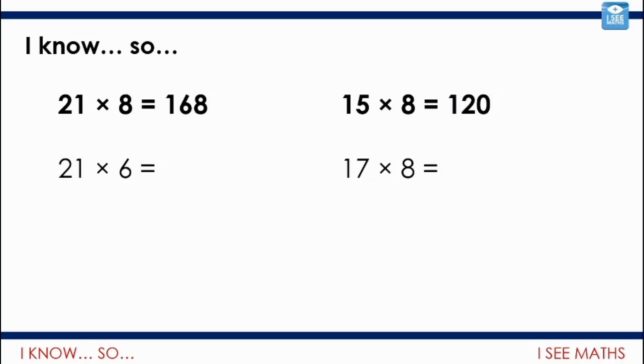So, two questions for you to finish with. 21 multiplied by 8 is 168. How can I use that to calculate 21 multiplied by 6? And, what about 15 times 8 is 120? 17 times 8? How are those facts related? Pause the video. How are they related? And, can you use that to work out the answers to those questions?